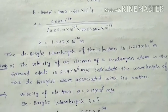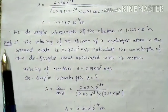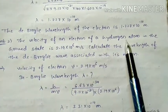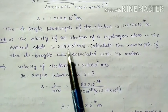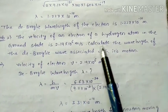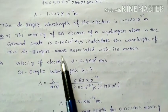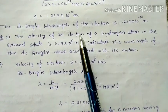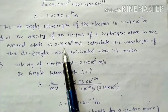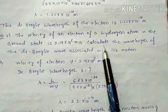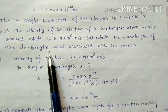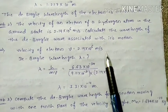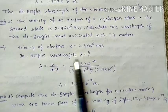That is the first problem. In the second problem, the velocity of an electron of a hydrogen atom in the ground state is 2.19×10⁶ m/s. Calculate the wavelength of the de Broglie wave associated with its motion. The velocity V = 2.19×10⁶ m/s is given, and we must find lambda.